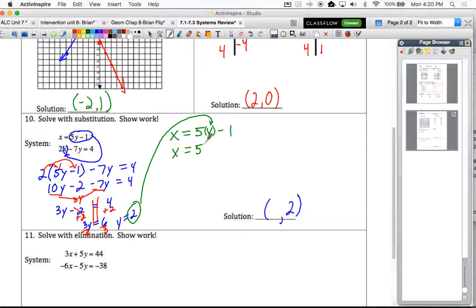So now we've got 5 times 2 minus 1. And so that's 10 minus 1. And that is 9. So our solution is the point 9, 2. Ordered pair of 9, 2.